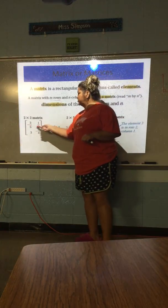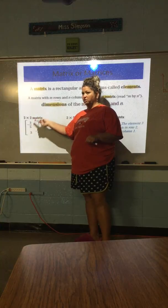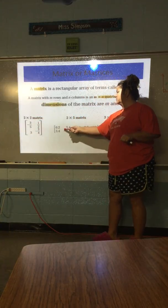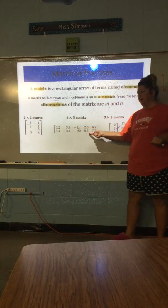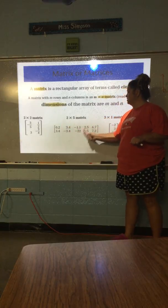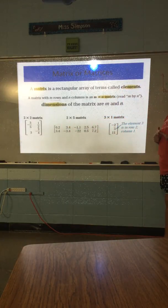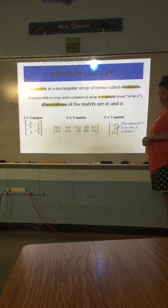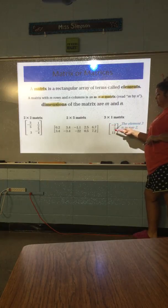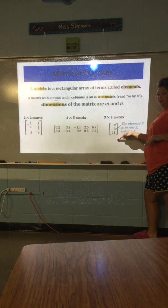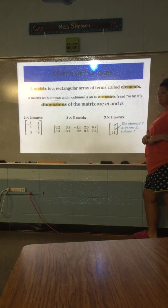So like this one has two rows, two columns. This one has two rows, but it has one, two, three, four, five columns, okay? This is going to be important when we start adding, subtracting, and multiplying. This one has one, two, three rows, and one column. Okay, so far so good?